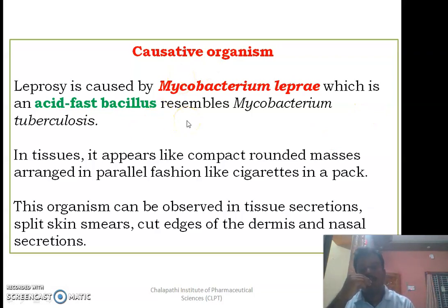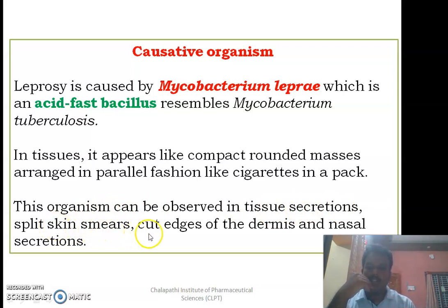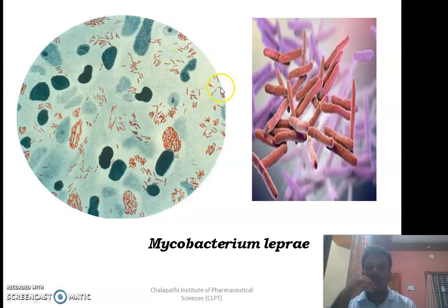Mycobacterium leprae resembles Mycobacterium tuberculosis — both are acid-fast in nature. In tissues, it appears pencil-like in a parallel fashion, like cigarettes in a pack. We can observe Mycobacterium leprae in tissue secretions, split skin smears, cut edges of the dermis, and nasal secretions. In the skin smear of a leprosy patient, the brown-colored organisms are Mycobacterium leprae.